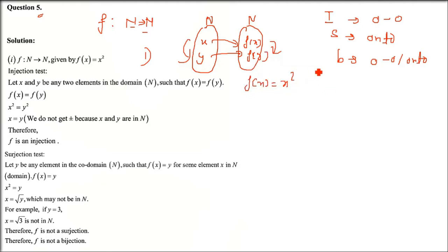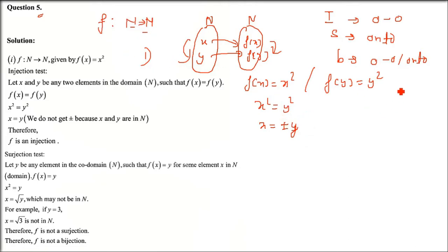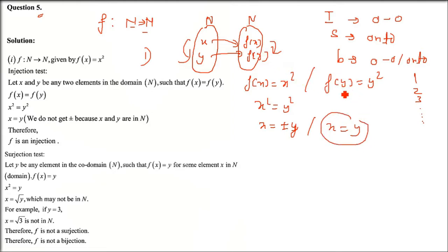Since f(x) = x², we have x² = y², so x = ±y. But natural numbers are only counting numbers 1, 2, 3 and so on - negative values don't occur. Therefore x = y, and since f(x) = f(y) implies x = y, this is an injection - it is one-to-one.